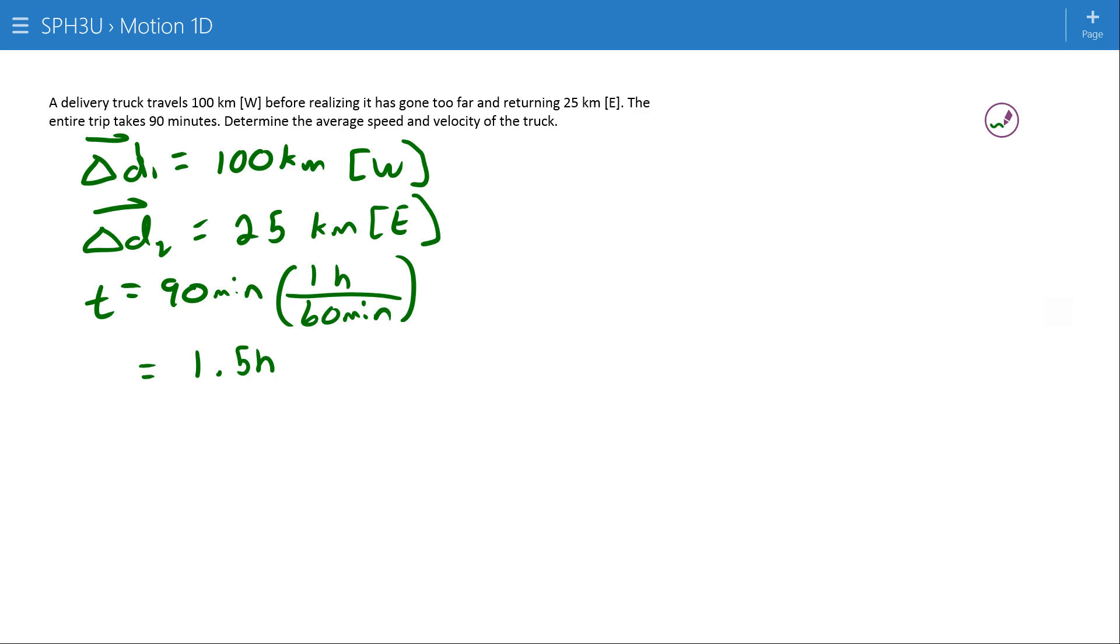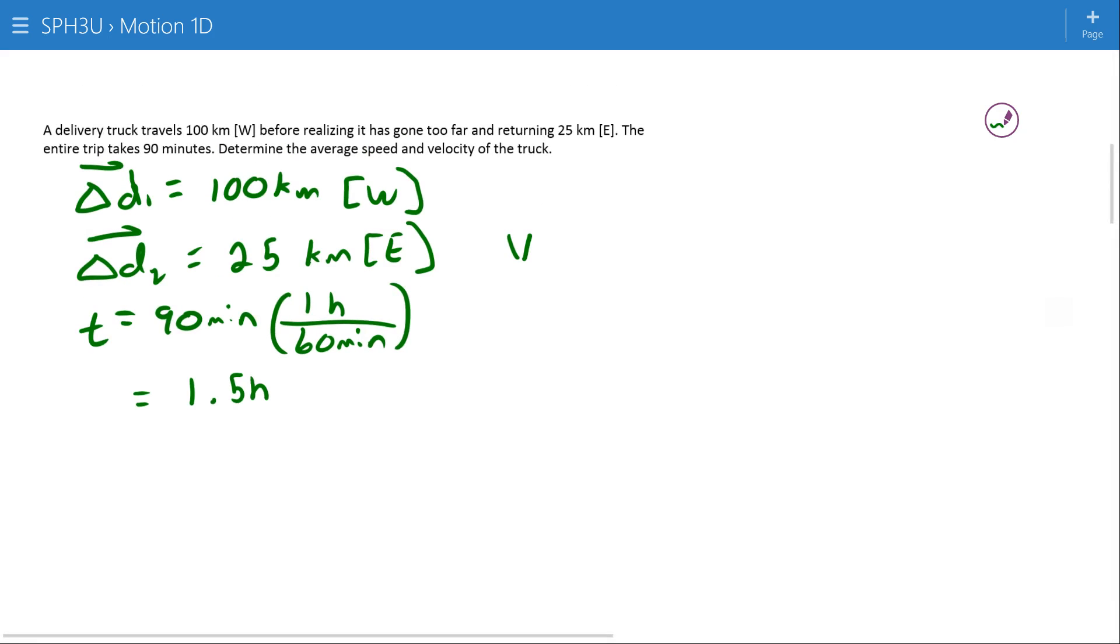So let's look at this then. The speed for the delivery truck is equal to the distance over time, and the velocity is equal to the displacement over time. And in these cases, we want the total of each.